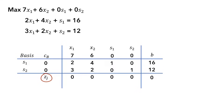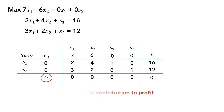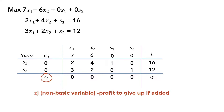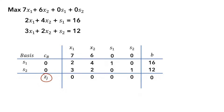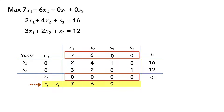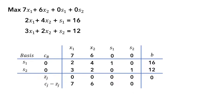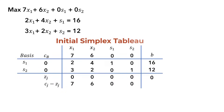The zj value for basic variables represents their unit contribution to the objective function value or profit. But for the non-basic variables, it represents the amount of profit foregone or given up if a unit of the variable is added to the current solution. Next, we have the cj minus zj row, which is calculated by taking each objective coefficient minus the zj value. It represents the net change in the value of the objective function, or profit, if one unit of each variable enters the solution, so it is referred to as the net evaluation row. For example, if x1 enters the basis and its value increases by 1, then the objective function increases by 7.